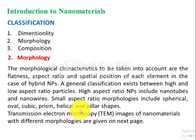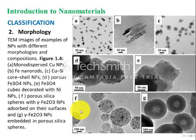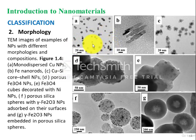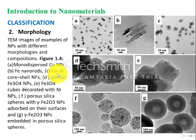Transmission electron microscopy (TEM) can be used to see the exact morphology of nanoparticles. TEM images of nanomaterials with different morphologies are shown in Figure 1.4. Figure A shows monodispersed copper nanoparticles, which are very small in size. Figure B represents iron nanorods. Figure C shows copper–silicon core–shell nanoparticles, which will be described later.